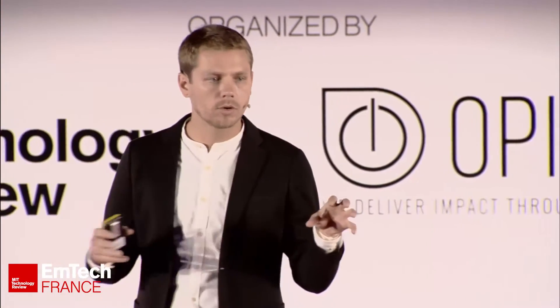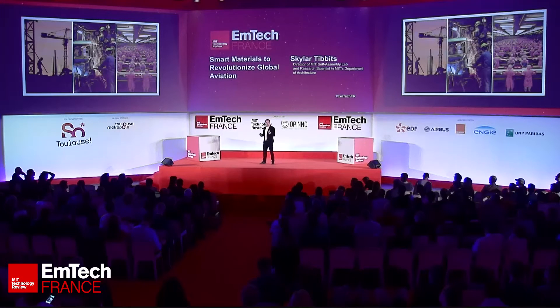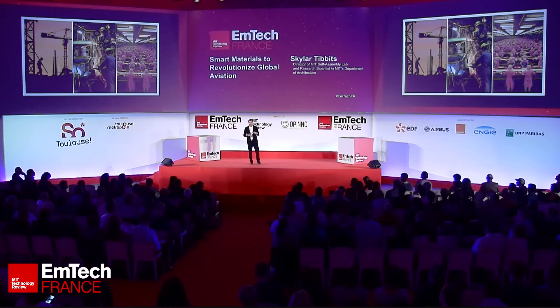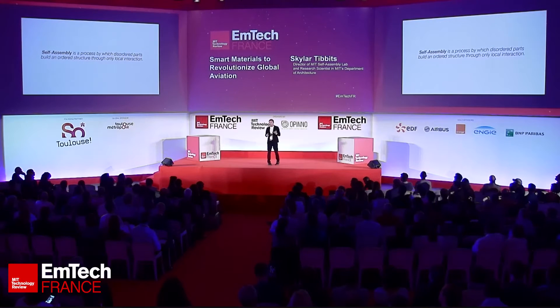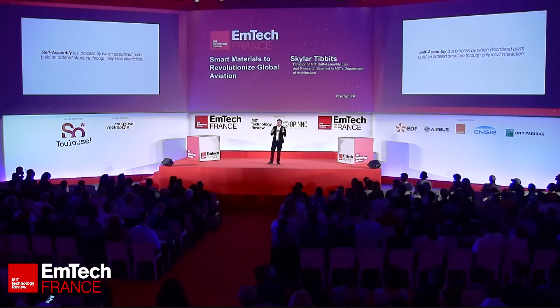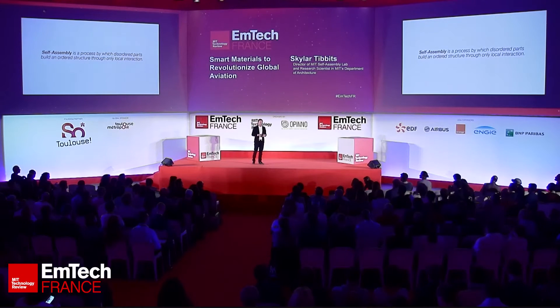If you look at every other scale — quantum to nano to micro, or astro scales like how planets and cells are formed — every one of those processes happens through bottom-up organization. You have a bunch of components that relate to one another, respond to their environment, and assemble things. Humans are built that way. But at the human scale we build from the top down, which is really strange.